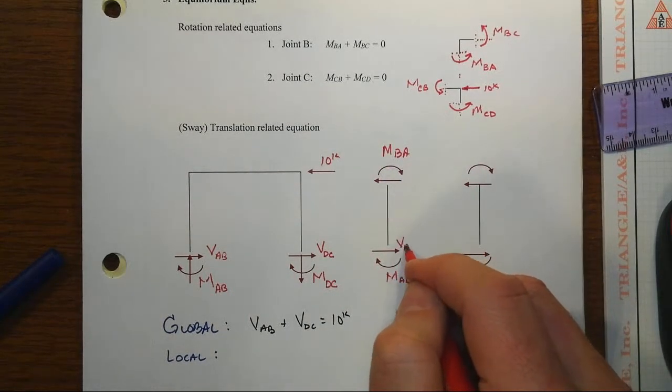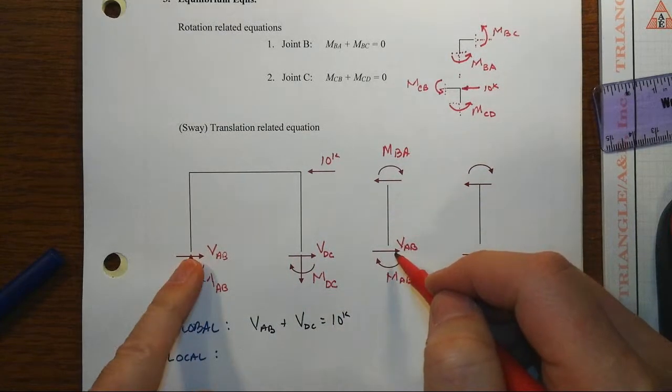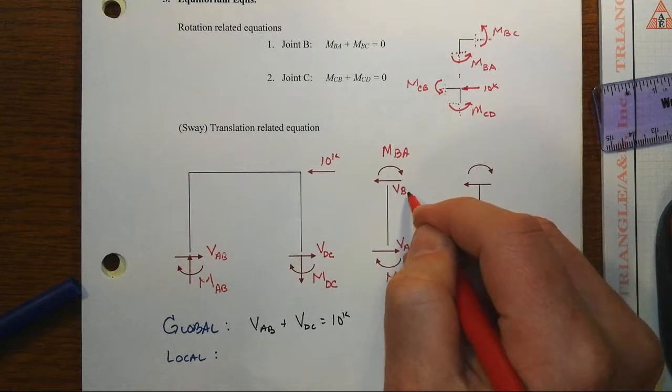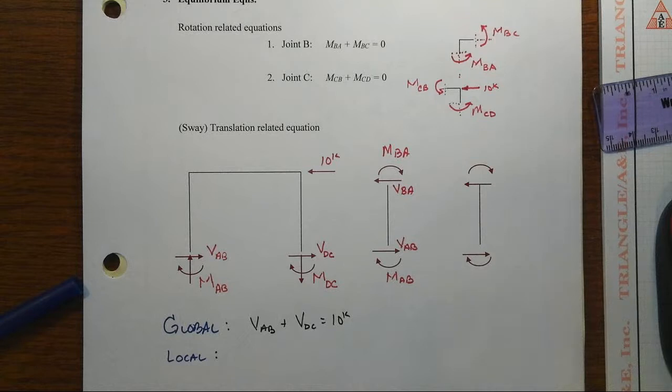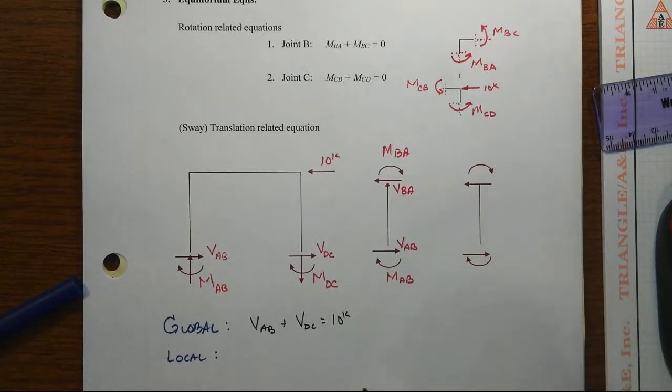That would have a moment at the end of MAB and at the other end MBA. We've got the shear that we just drew over here at the left is VAB. It needs to be in the same direction as what we had there, and then the one at the top would be VBA.